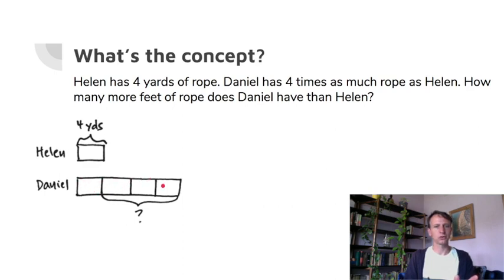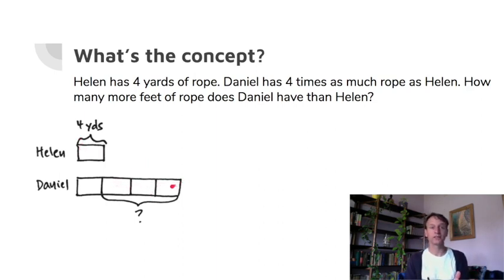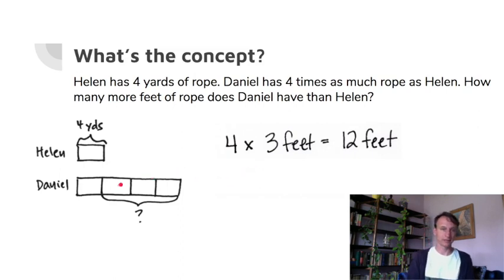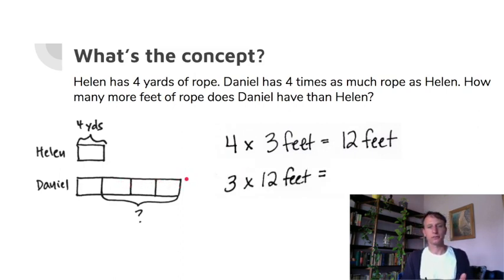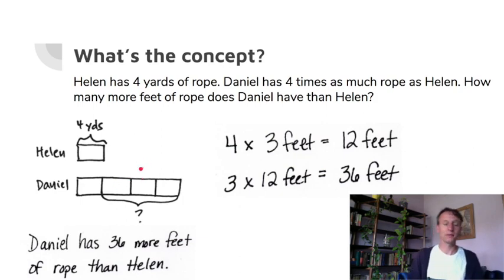Here's a shortcut: instead of converting all of Daniel's rope to feet and subtracting, we only need to find the difference — three of those four-yard groups. So four times three feet per yard equals 12 feet per group. Then three times 12 feet is 36 feet. Statement: Daniel has 36 more feet of rope than Helen.